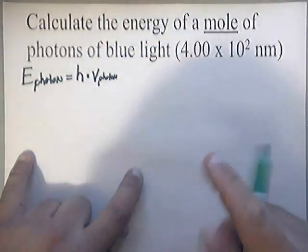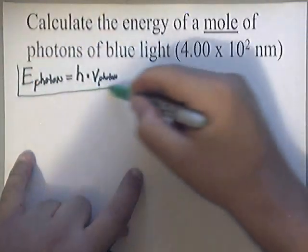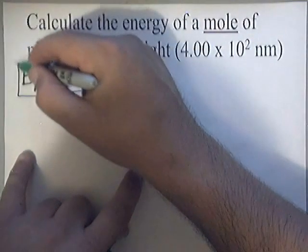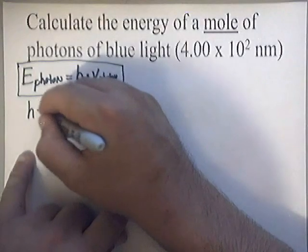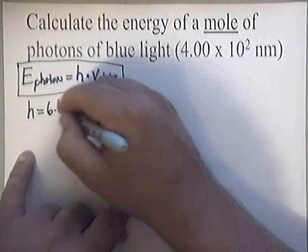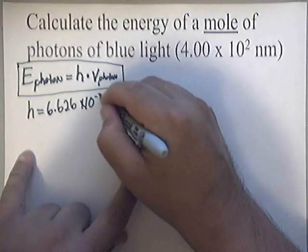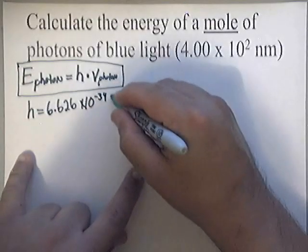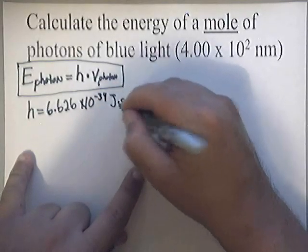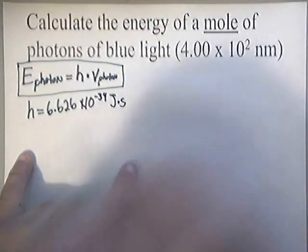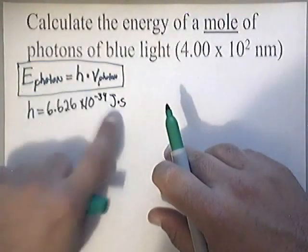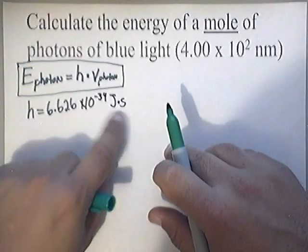That's per photon. Now, Planck's constant you need to just memorize. Planck's constant is H equals 6.626 times 10 to the negative 34th joules times the second. If you'll notice, the units of energy is joules, that's why you see joules in Planck's constant.